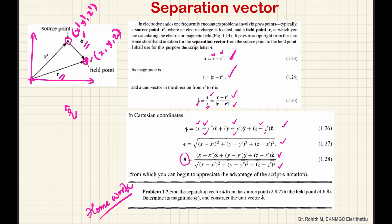You have another homework: find the separation vector from the source point at coordinates (2, 8, 7) to the field point at coordinates (4, 6, 8). Determine its magnitude and construct the unit vector r-hat (the unit vector along the direction of the separation vector). Hope you understood the concepts of position vector, displacement vector, and separation vector. We will stop here with vector algebra. In the next class, I will discuss differential calculus. Thank you.